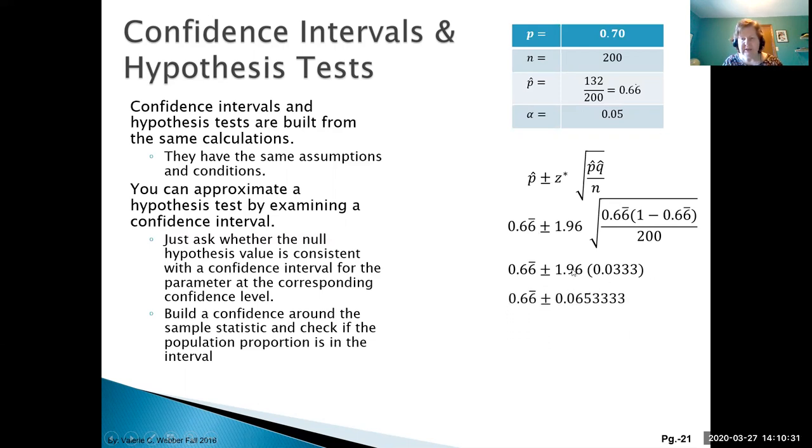When we calculate z times the standard error, this is our margin of error. Adding and subtracting it from our point estimate gives us the interval 0.601 to 0.732. We can now use this interval to make a conclusion. Our population proportion was 70% or 0.70.